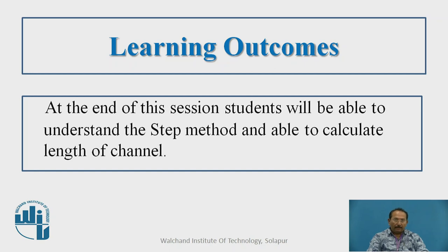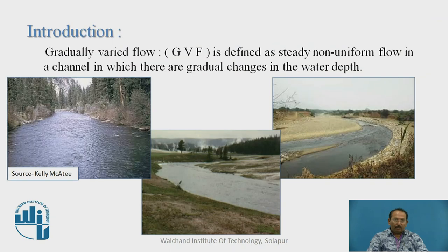Just see the figures, photographs. We can observe here, you can say it is a gradually varied flow. What is a gradually varied flow? It is defined as a steady non-uniform flow in the channel in which there are gradual changes in the water depth.